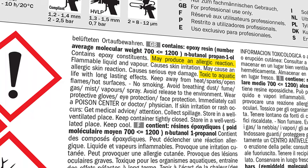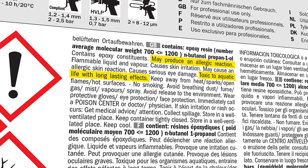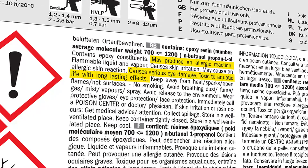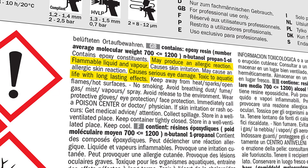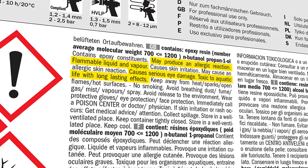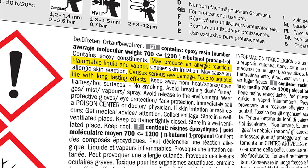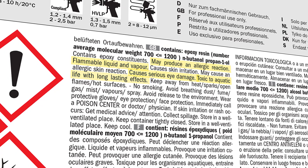Hazard statements are specific to the hazard classification categories and to the chemical. Users should always see the same statement for the same hazards, no matter what the chemical is or who produces it.